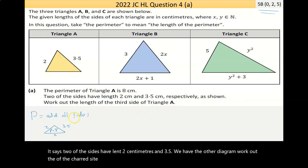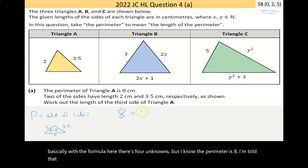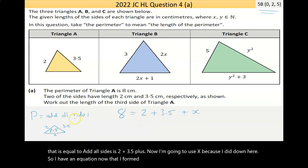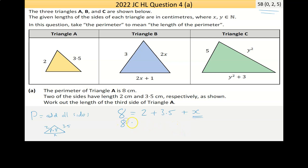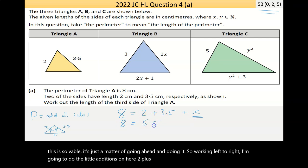It says two of the sides have length 2 centimeters and 3.5. Work out the length of the third side. So if I have my formula here, in the triangle, there's basically four unknowns with the formula here. But I know the perimeter is 8. So 8 is equal to add all sides, 2 plus 3.5 plus X. Working left to right, 2 plus 3.5 is equal to 5.5.